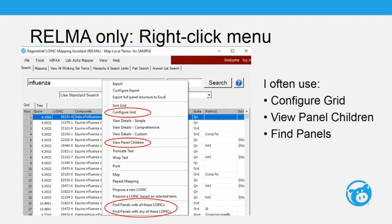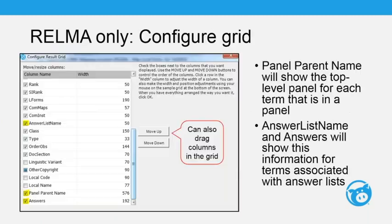If you have a particular term and want to know if it's in a panel, you can right-click and select 'find panel with all these LOINCs' or 'any of these LOINCs.' When multiple terms are selected, the 'all' versus 'any' distinction becomes important. There's also another way using the configure grid feature to see panel membership.